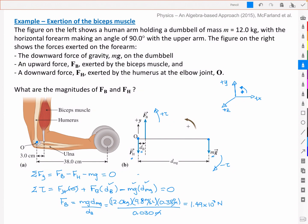That means from up above, I can then go and solve for FH, given by FB minus mg. And so I find that the force of the humerus bone pushing downward is 1.37 times 10 to the 3 newtons.